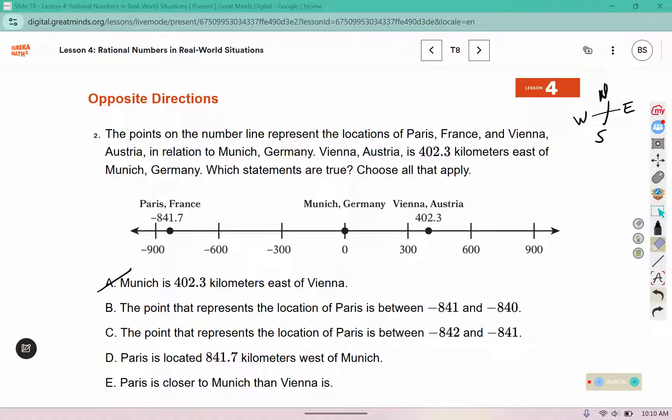B, the point that represents the location of Paris is between negative 841 and 840. Well, 841.7 below that would be 841, and then this .7 should be 842 would be the next number in the sequence. So is it between negative 841 and negative 840, or negative 842 and 841? Should be C.